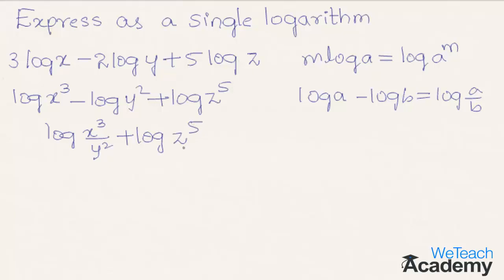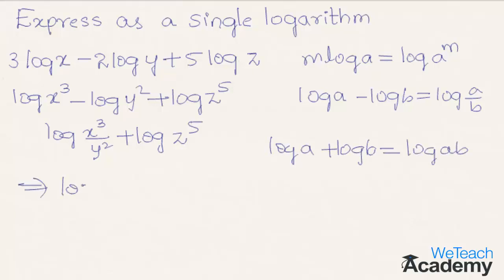Using the law of product, we can write log a plus log b is equal to log(ab). So we can write this as log(x³/y² × z⁵). Therefore we have expressed the given logarithmic terms into a single logarithm.